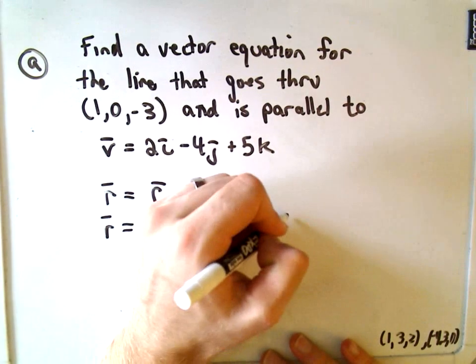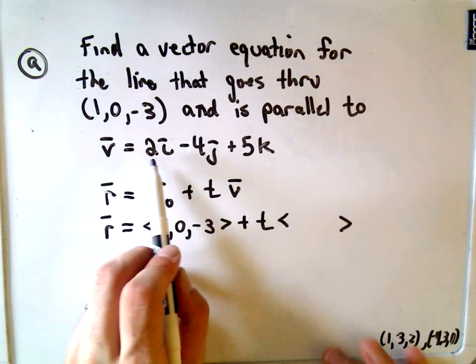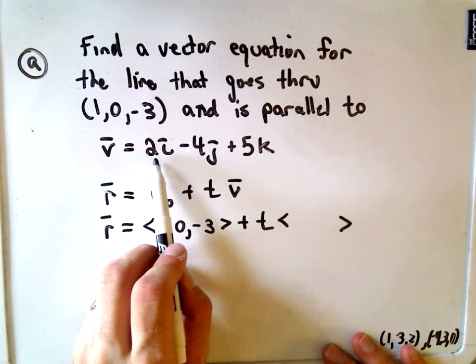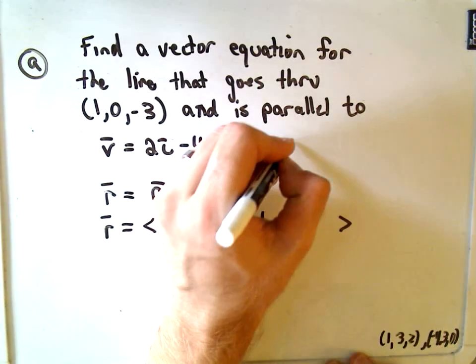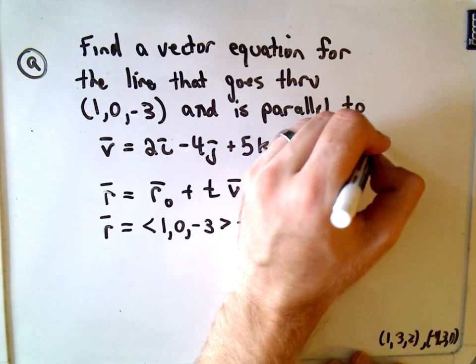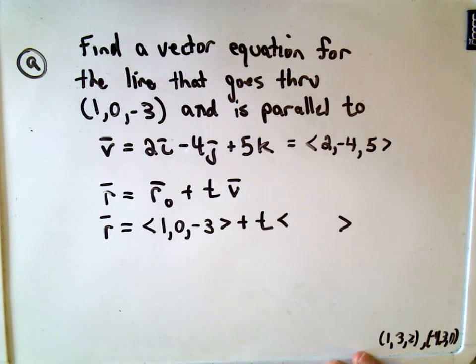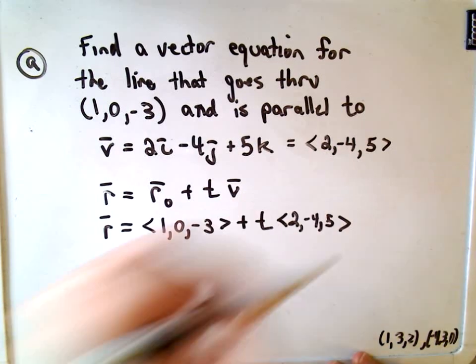We drop in our t, and now it's easy again. We need a vector v that's parallel, but they tell us that—I mean, we're given for free that this vector is parallel. So we can write it in component form as ⟨2, -4, 5⟩. So that's all I'm going to drop in there: 2, -4, and 5.